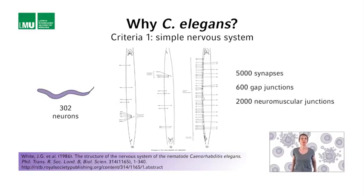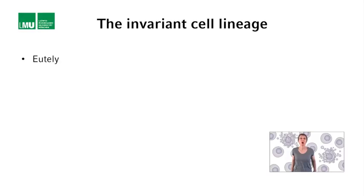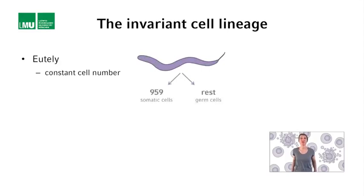Think about this: a nervous system composed of exactly 302 neurons. How can that be? This is because of a phenomenon referred to as eutely, or constant cell numbers. Every C. elegans worm has exactly 959 somatic cells — somatic cells being cells that are not germ cells. Every one of these 959 somatic cells has a name and a known function.